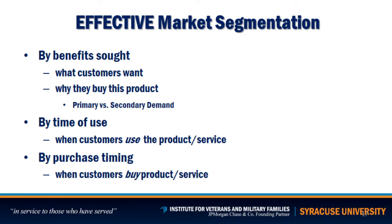In terms of effective market segmentation, you can segment by benefit — what customers want, why they buy — and you can identify primary versus secondary demand. Primary demand is when people know about your product and are willing and able to buy it. Secondary demand is the population that doesn't know about your products but, if they did, would be willing and able to buy. Understanding this helps you strategically position yourself and also helps with marketing later on.